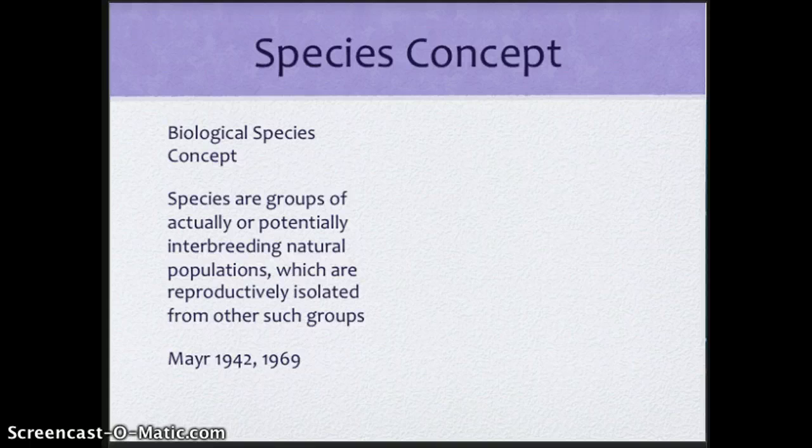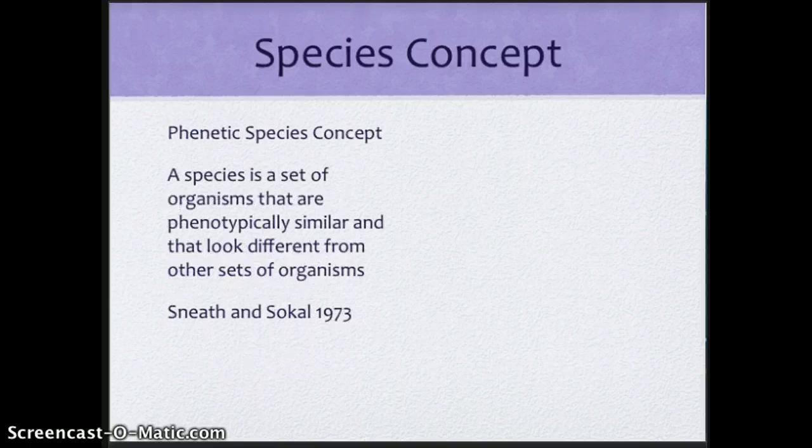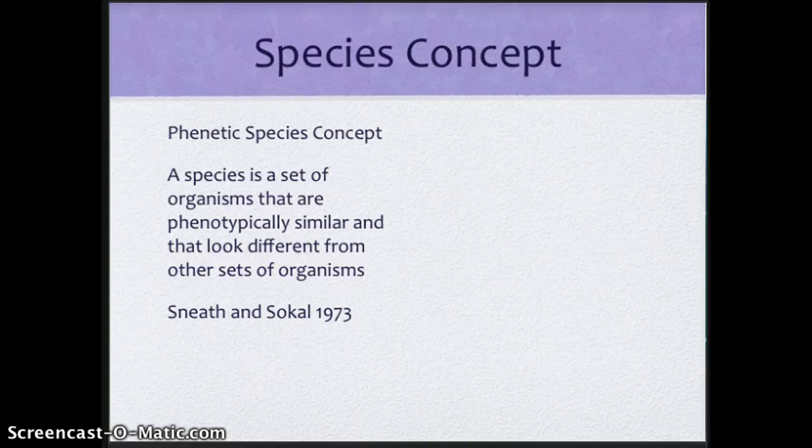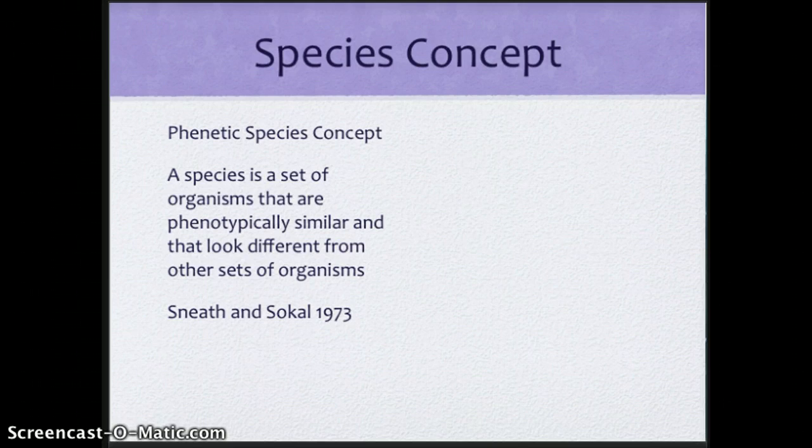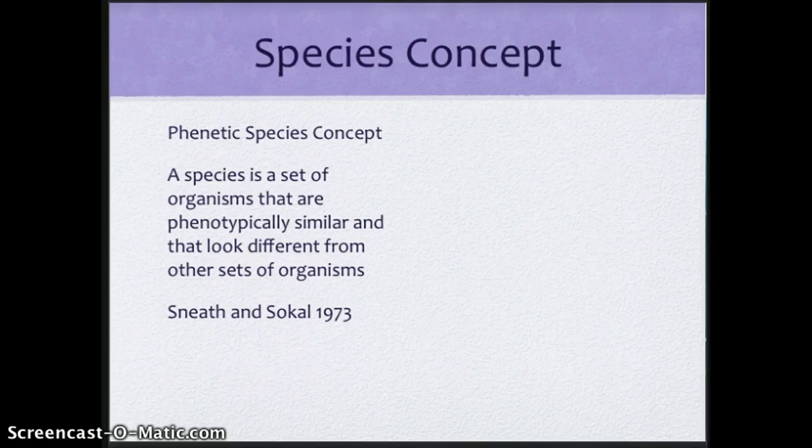In fact, it was defined a little bit later in the early 1970s by Sneath and Sokal that this whole idea of a phenetic species concept where a species is a set of organisms that are phenotypically similar and that look different from other sets of organisms. So we're going to look at things that, well, look alike. And we're going to say, do these two things that look alike interbreed? So kind of building on Mayr's species concept and adding to it. But again, we're still looking at morphology here.